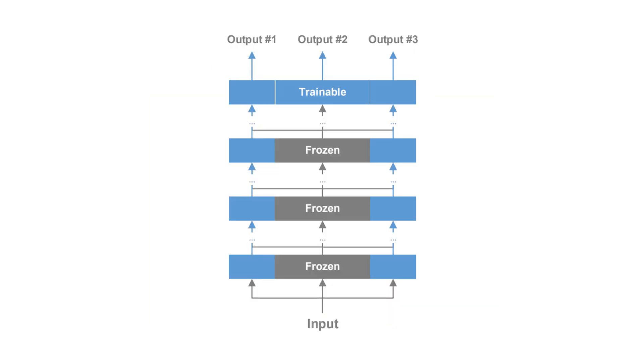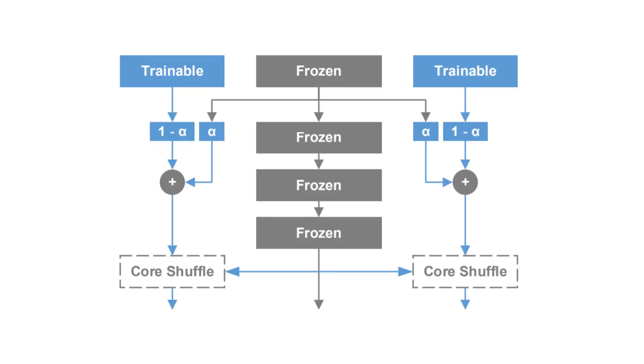Our system consists of one frozen core and two parallel trainable cores. The trainable cores selectively transfer and enrich frozen core features using trainable alpha blending parameters. An optional core shuffle module lets the two trainable cores exchange feature maps to act together more efficiently.